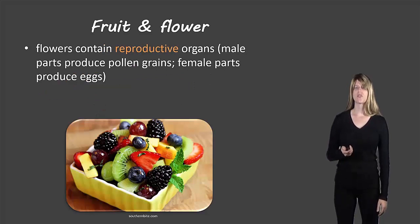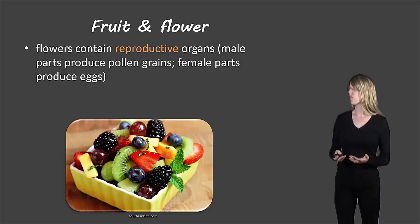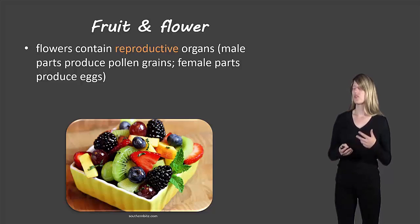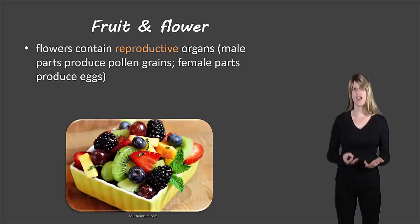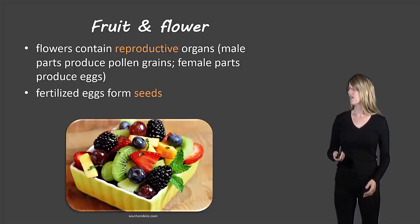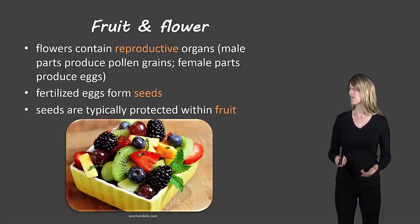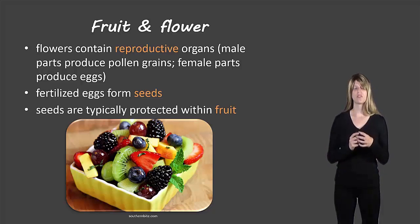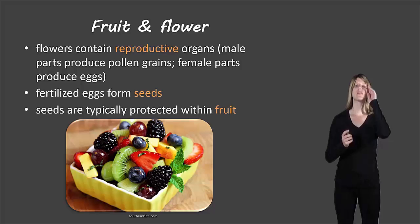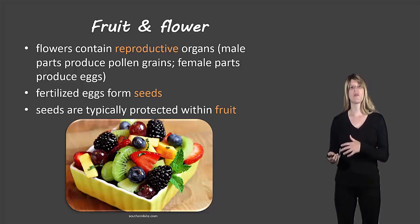The next one is the fruit and flower. These contain the reproductive organs. The male parts produce the pollen grains, and the female parts produce the eggs, so they're responsible for reproduction. The fertilized eggs form seeds, and the seeds are usually protected within the fruit.